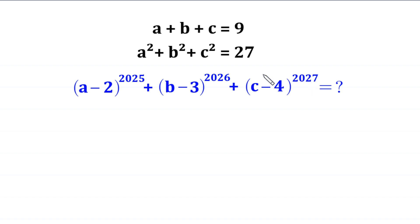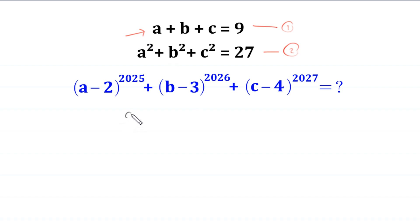Let us start. Let us call this equation number 1 and this equation number 2. First, we square both sides of equation 1. Equation 1 is a plus b plus c is equal to 9, and we square both sides.